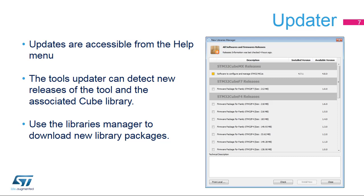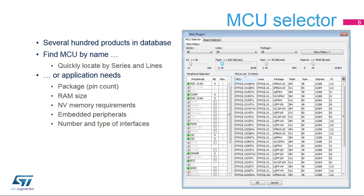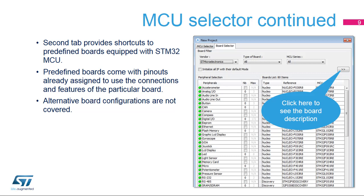The MCU selector window will come up after selecting the new project option. If the user knows which MCU to use, it can be found quickly. If not, the available products can be filtered based on the specific requirements. Configurations for existing STM32 boards are available under the Board Selector tab. If, for example, an STM32L476G-Eval board is selected, then the IOs for the LCD, buttons, audio, and communication interfaces are loaded.